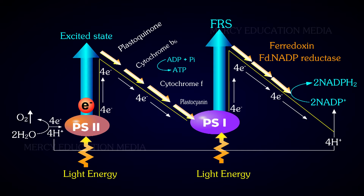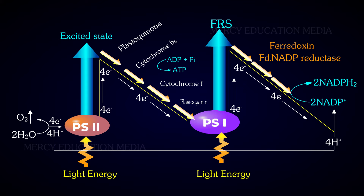When the molecules in PS2 get excited, electrons are released. They are transferred to fill the hole in PS1 through plastoquinone, cytochrome B6, cytochrome F, and plastocyanin. When the electron is transported between plastoquinone and cytochrome F, ADP is phosphorylated to ATP.